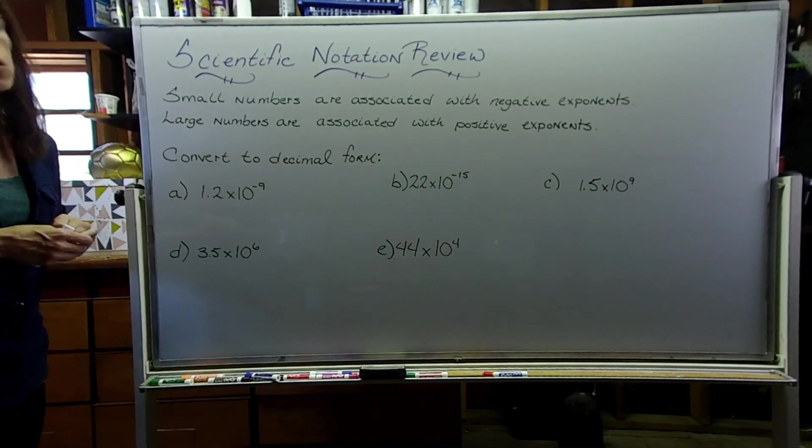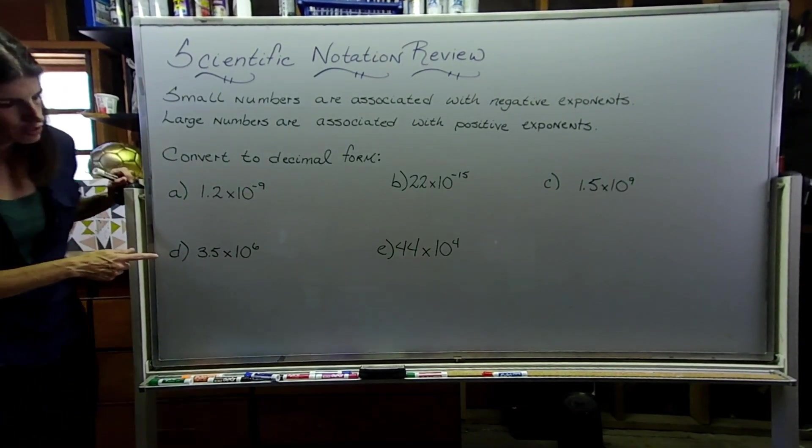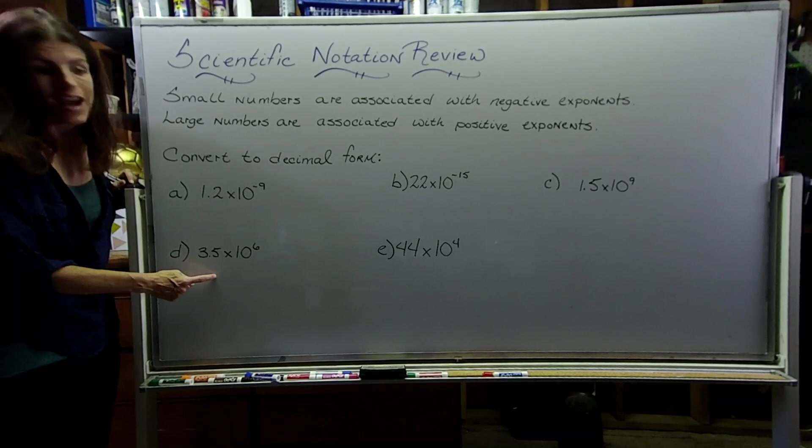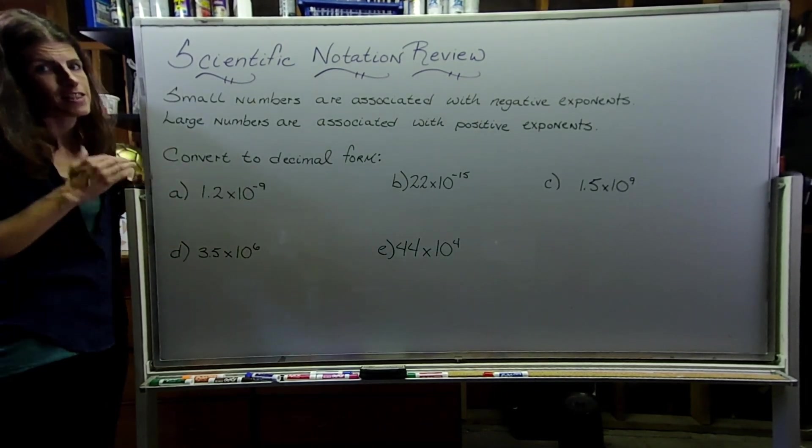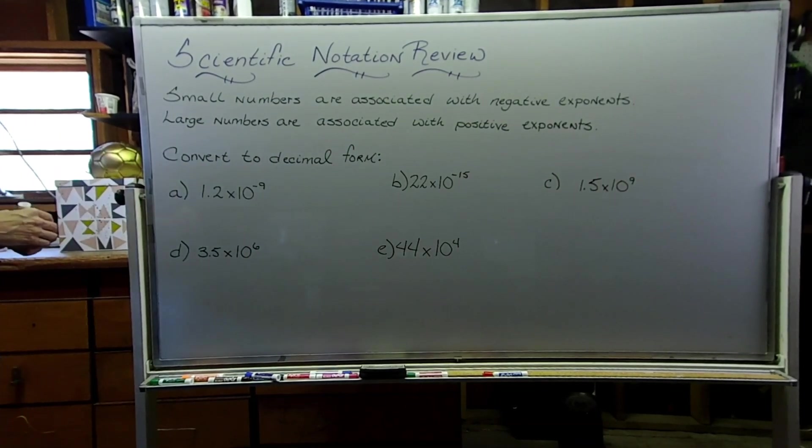And the opposite also holds true. If I have a positive exponent, like in letter D here, I have 3.5 times 10 to the positive 6, then I know that's going to turn into a big number when I convert it over to decimal form.